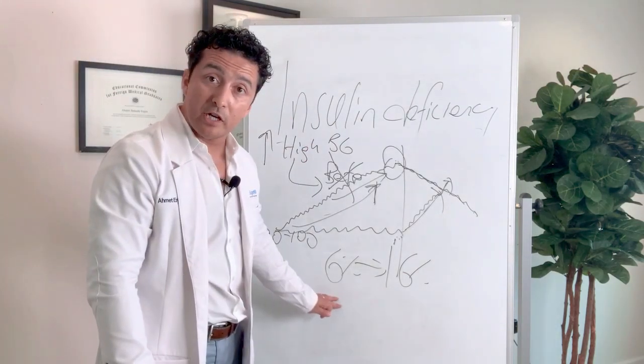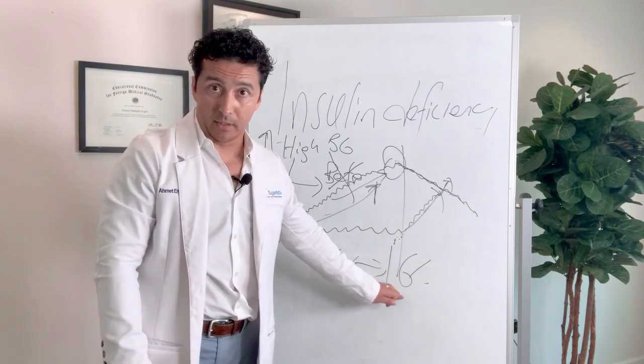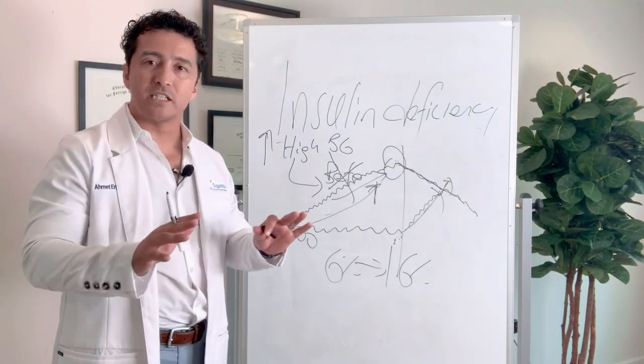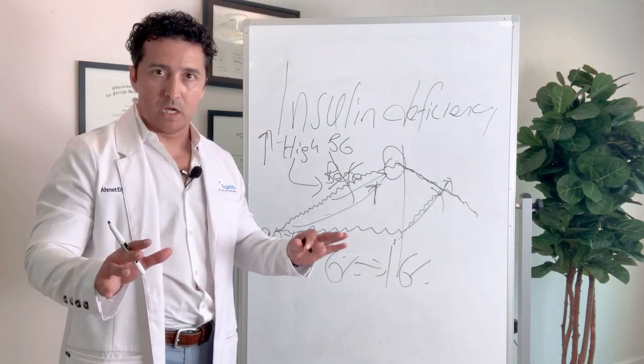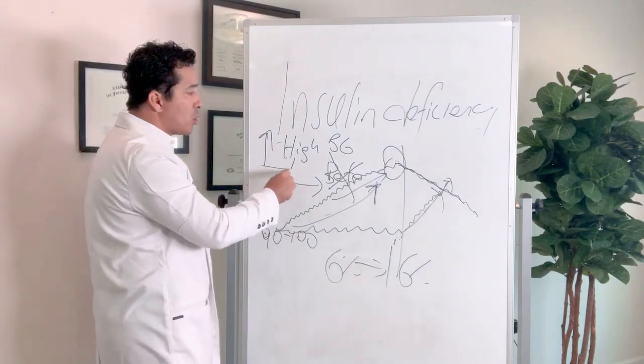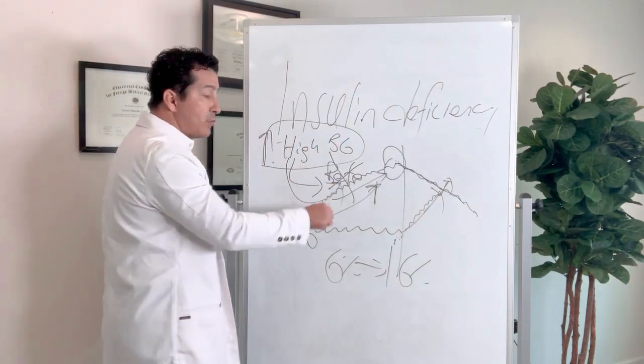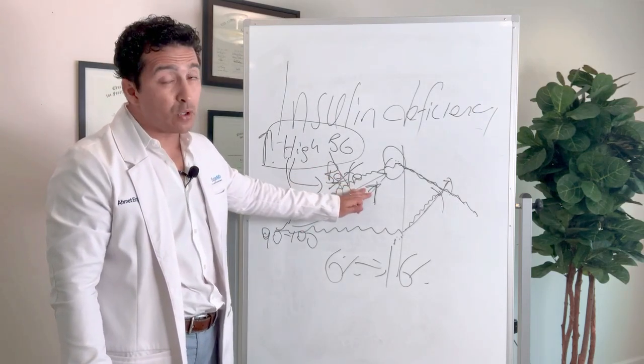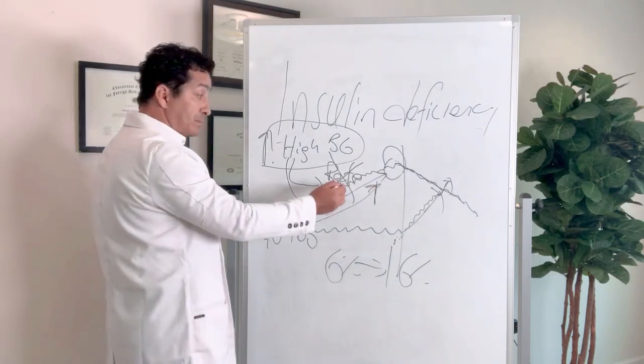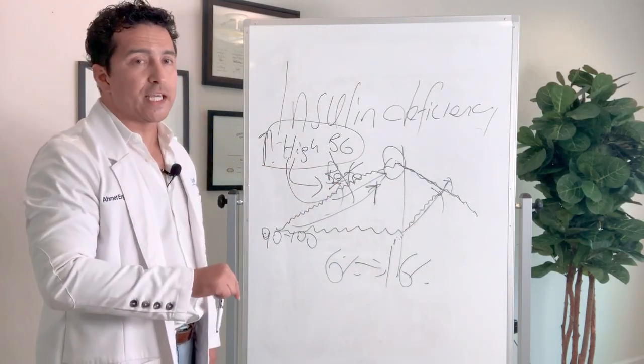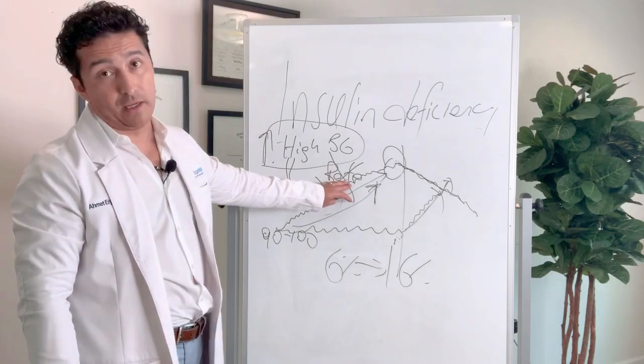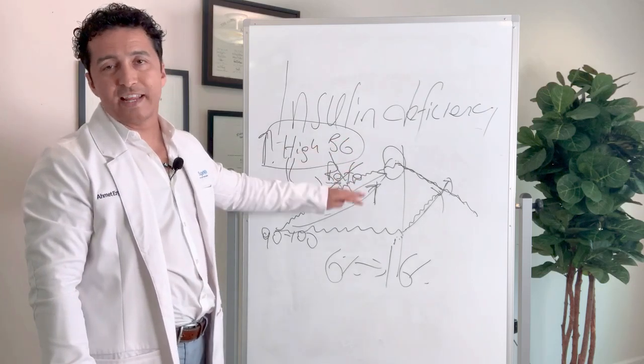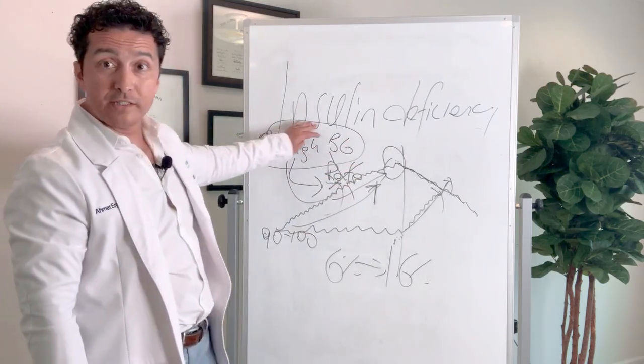People come to me and they say, my A1C was 6% a couple months ago. What happened to me? 16% because you got into what we call a crisis. It's called glucotoxicity. Glucotoxicity means that your glucose starts going up and becomes toxic to your pancreas, will totally paralyze your pancreas, your beta cells. Your beta cells will become unresponsive. They may not be totally dead, but they will be paralyzed. Unless you bring your blood sugars down very quickly, those beta cells are not going to do anything. Even if you start eating well for a while, these beta cells will stay paralyzed. And then that causes insulin deficiency.